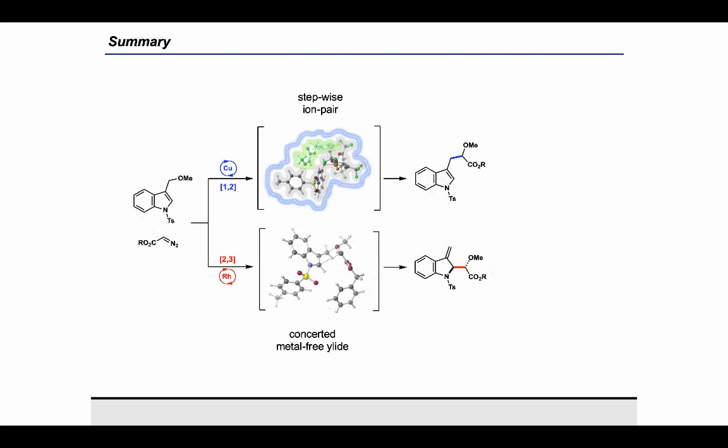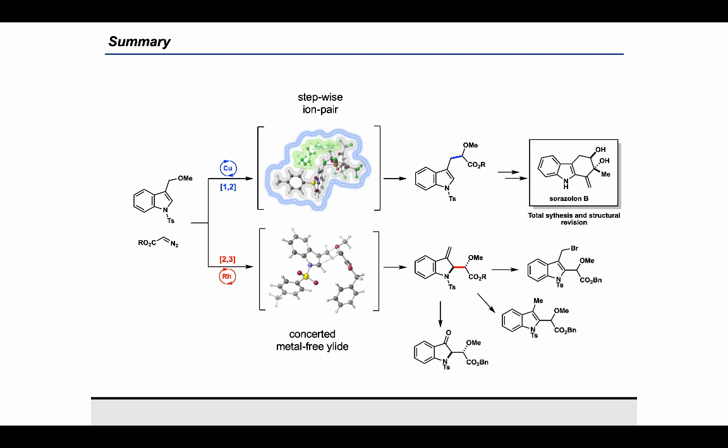In summary, we have developed a catalyst-controlled approach to do regiodivergent rearrangements of ylides in indole systems. While the copper catalyst promotes a regioselective 1,2 rearrangement, a rhodium catalyst was shown to do a regioselective 2,3 rearrangement. We did experimental and computational studies to analyze the divergent mechanistic pathways for the two rearrangement processes. And we also showed the synthetic utility of the two rearrangements by functional group transformations, as well as the total synthesis of the natural product Cerasinol B, which enabled its stereochemical reassignment.